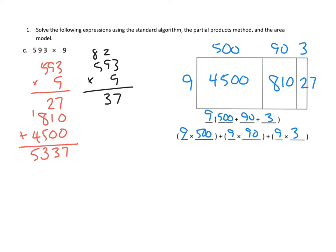And the 8 goes up here. And then 9 times 5 is 4,500 plus 8 more hundreds is 5,300. And so in every single one of our pieces, we'll end up with the same answer. We will have 5,337 here.